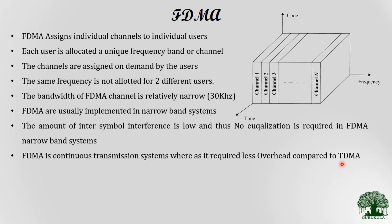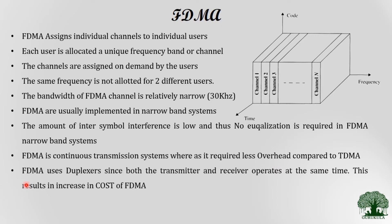The overhead required for FDMA systems is also very low compared to TDMA systems — this will be discussed further in subsequent videos. FDMA uses devices called duplexers since both the transmitter and receiver operate at the same time, making it a full-duplex concept. Duplexers provide frequency separation between the transmitter and receiver, but their use increases the cost of FDMA systems.